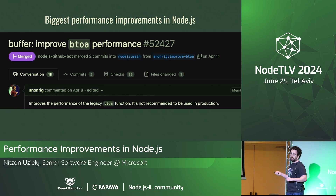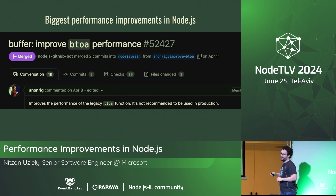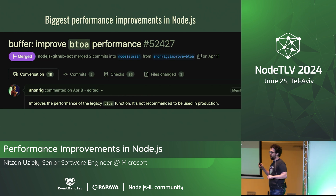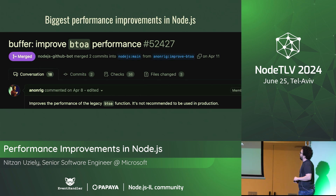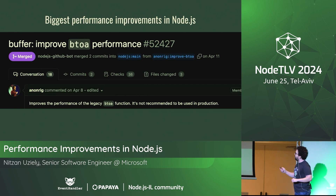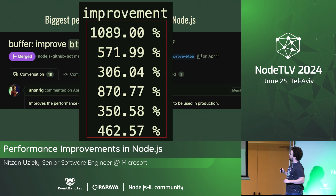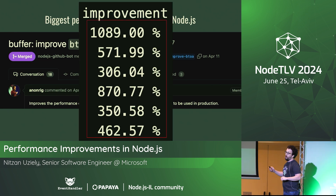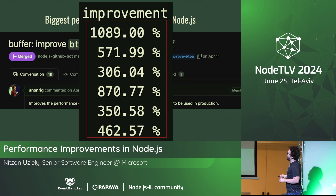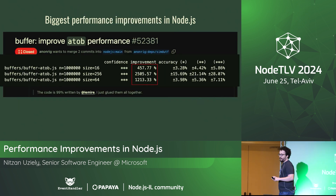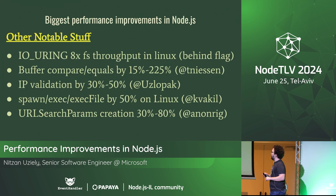btoa — this is relatively new in Node, though ancient elsewhere. There was a performance issue basically from day one. This new PR increased performance by between 300% and 1,000%. And if you talk about btoa, you have to talk about atob — atob had up to 2,500% improvement.